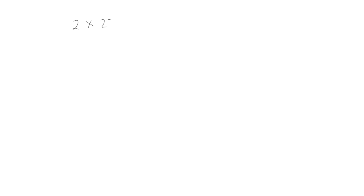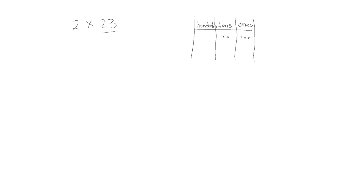Let's start with 2 times 23 and we're going to show this in a place value chart. We're going to show 23 as 2 tens and 3 ones, and we're multiplying this 2 times. We're going to write this problem vertically and we count how many 1's we have — we have a total of 6 1's.